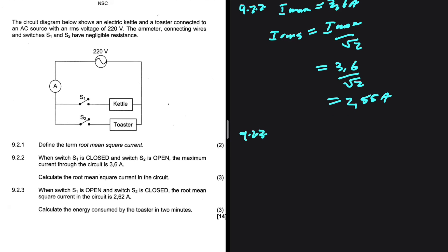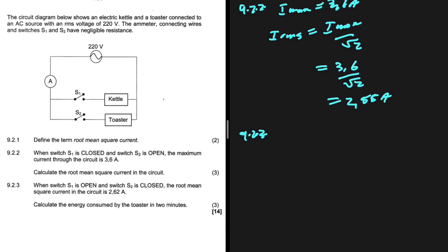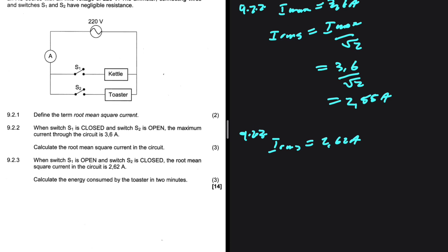9.2.3, on the other hand, when switch S1 is open and switch S2 is closed, the root mean square current in the circuit is 2.62 Ampere. So, now we have IRMS which is 2.62 Ampere. Calculate the energy consumed by the toaster in 2 minutes. So, we want the energy. The energy is equal to the power multiplied by the time.